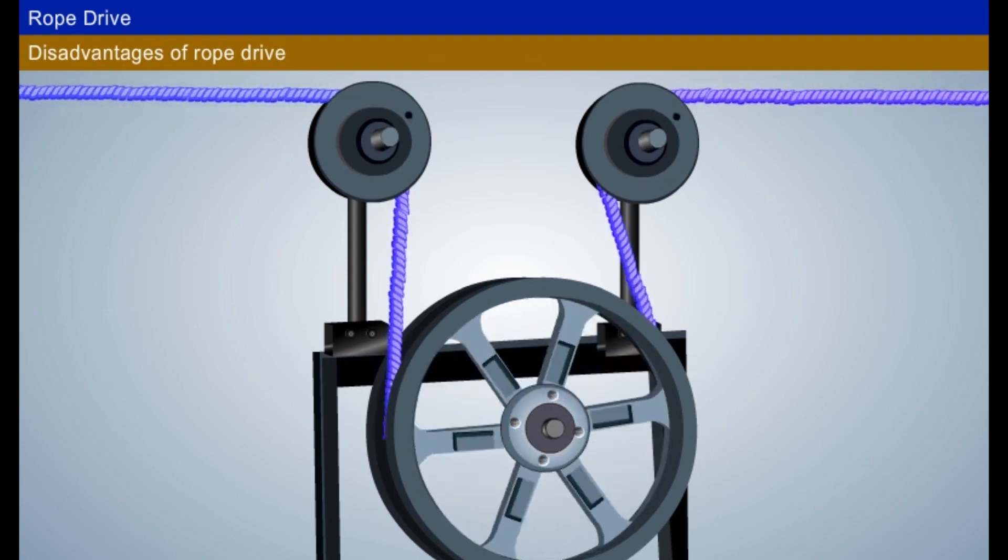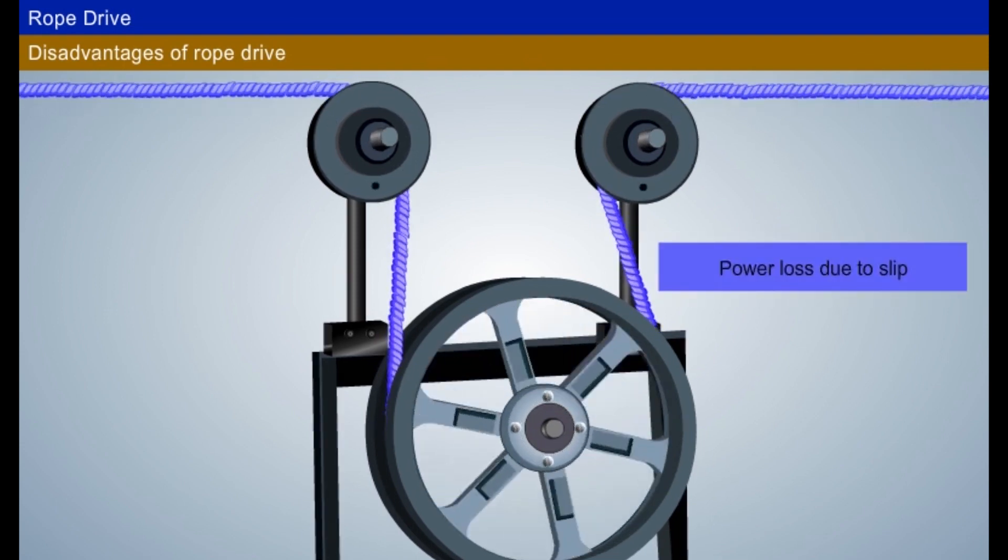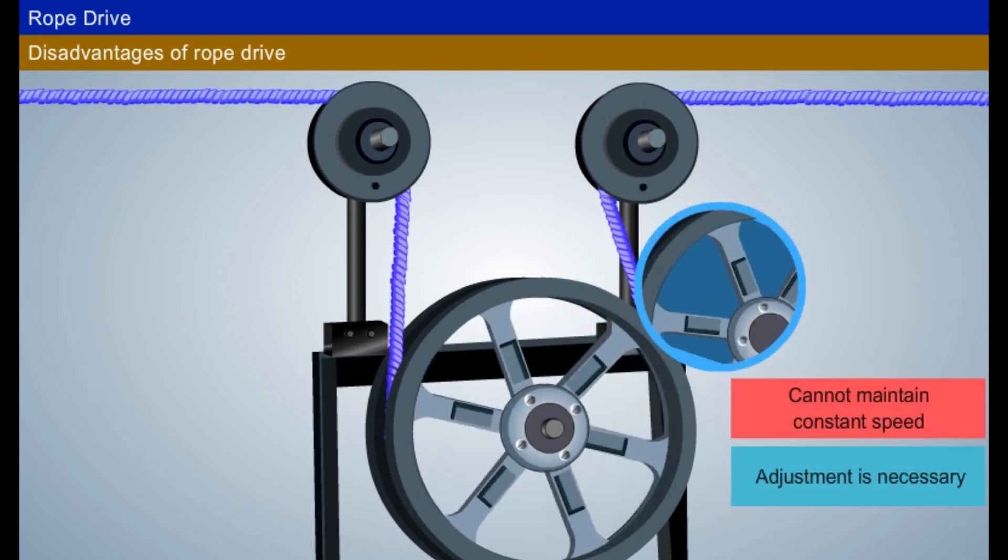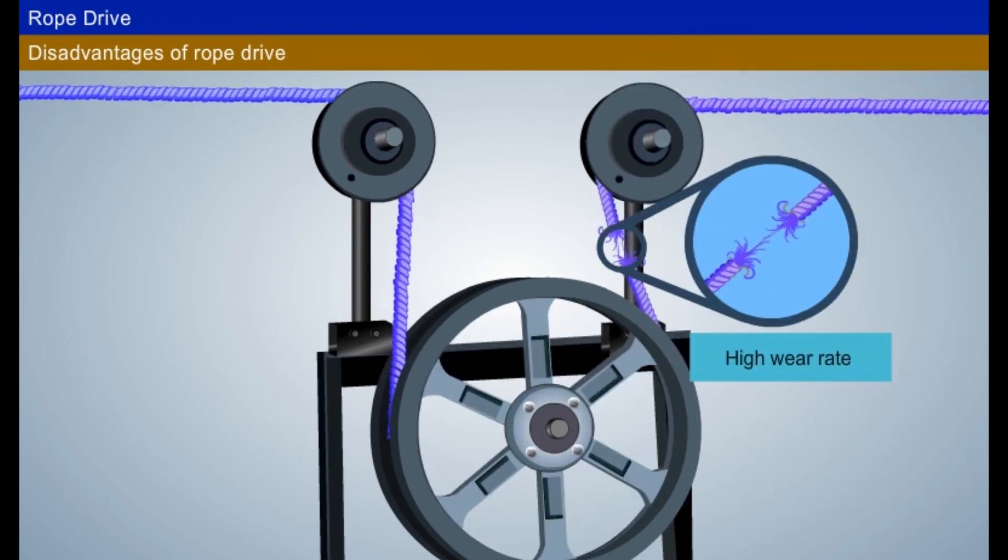The disadvantages of rope drives are: Power loss due to slip. Constant speed ratio could not be maintained. Adjustment in center distance is mandatory. Wear rate is high for the wire rope pulley.